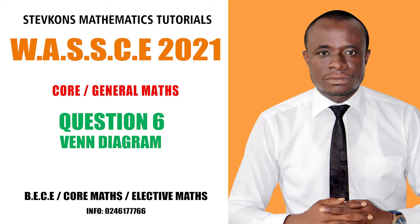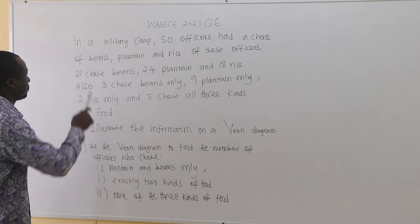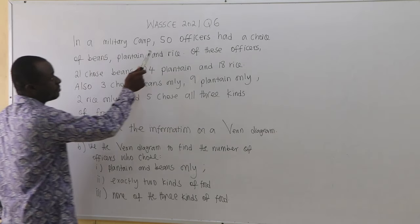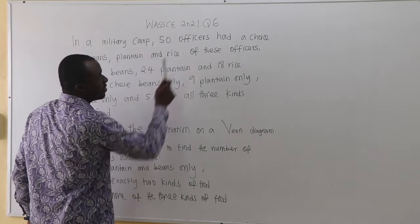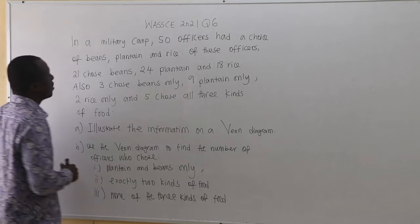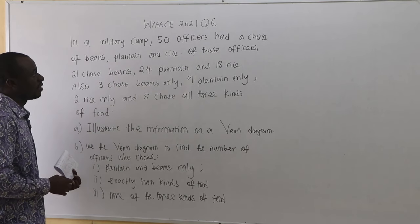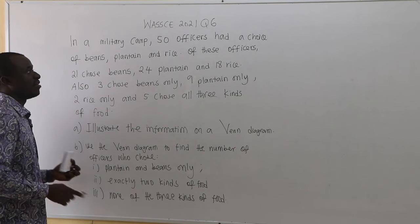Question number six is on Venn Diagram. In a military camp, 50 officers had a choice of beans, plantain and rice.